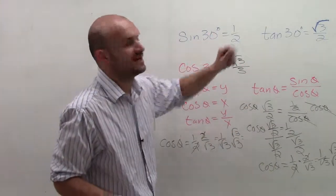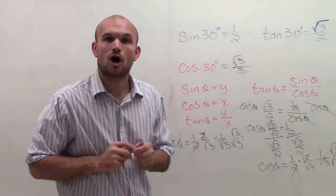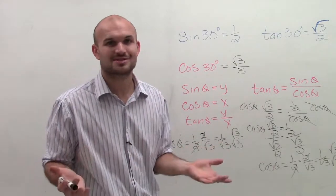So that is how, when given the sine and tangent of an angle, you can figure out the cosine. I hope it helped. Let me know if you have any questions. Subscribe as always. Thanks.